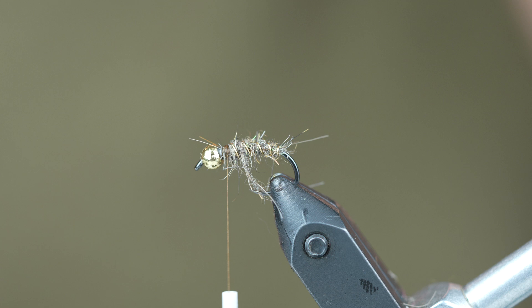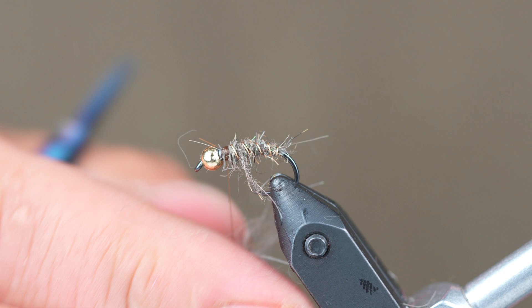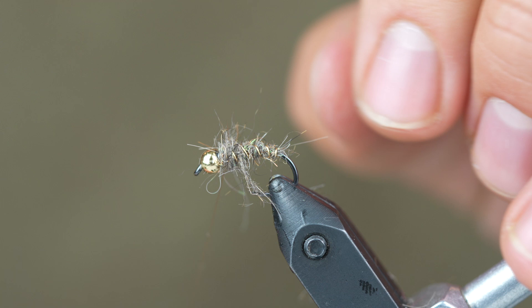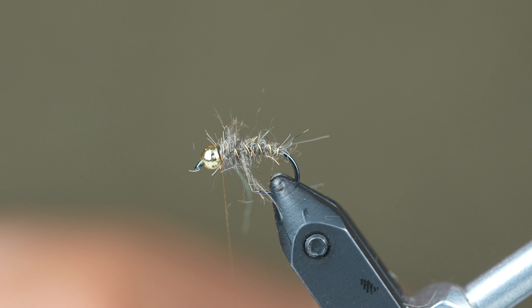Now we're going to build up a little bit of a thorax with a little more dubbing. This just provides something that helps keep those soft hackles pushed out away from the body a little bit so that they don't lay directly against the body of the fly and kind of disappear. So we'll build up a little bit of a thorax right there, still leaving a little bit of room behind the bead head for our soft hackle.